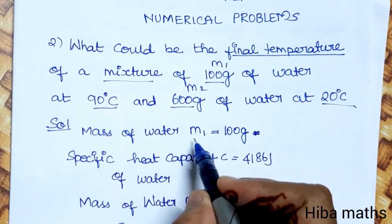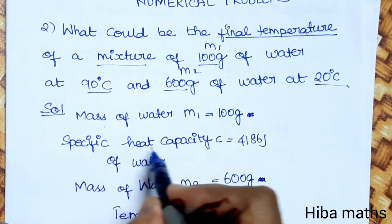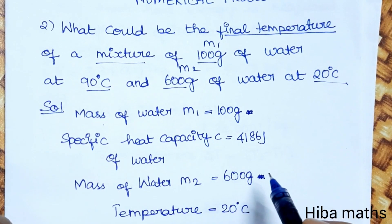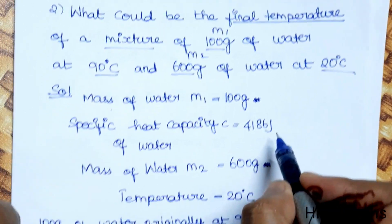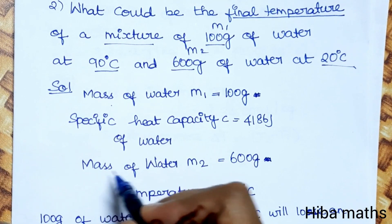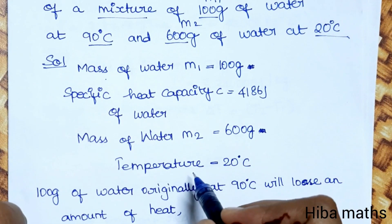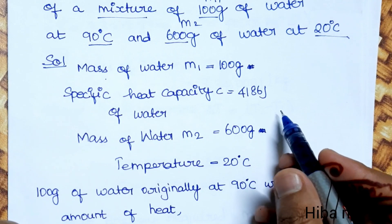Mass of water m1 equals 100 grams. The specific heat capacity of water is given in the question as c equals 4186 joules. Mass of water m2 is 600 grams. Now for temperatures, the first temperature is 90 degrees Celsius.